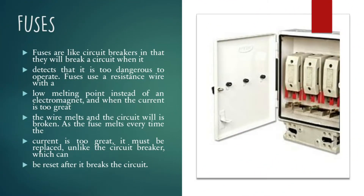Number two — fuses. Fuses are like circuit breakers in that they will break a circuit when it detects that it is too dangerous to operate. Fuses use a resistance wire with a low melting point instead of an electromagnet. When the current is too great, the wire melts and the circuit will be broken. The fuse must be replaced unlike the circuit breaker, which can be reset after it breaks the circuit.